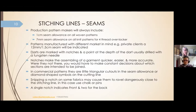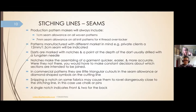Production pattern makers will always include a one-centimeter seam allowance, and I would never accept a pattern without seam allowance — the waste of time for the cutting room to add seam allowance is inconceivable. For wovens, use one-centimeter seam allowance. On knits, we normally add a seven-millimeter seam allowance because that's the bite of a four-thread overlocker, unless the garment is being produced on a five-thread safety stitcher with chain stitch, in which case you go back to one centimeter.